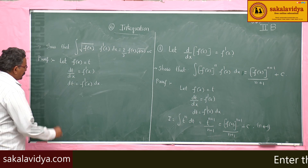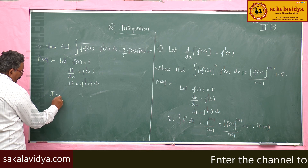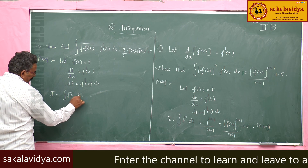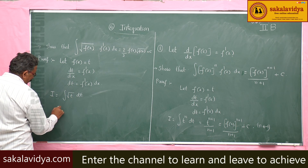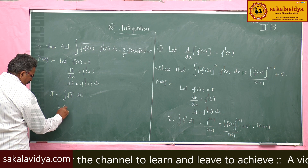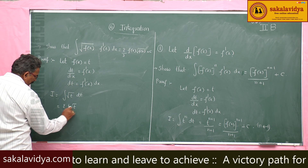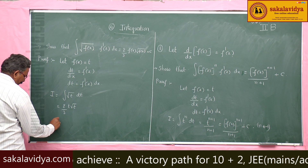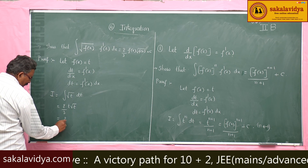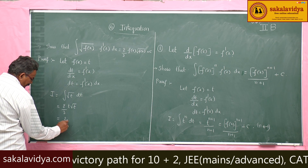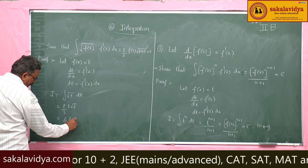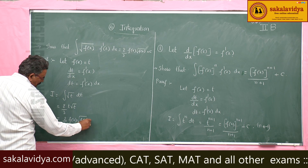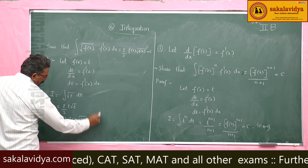Now this integral becomes the integral of √t dt, which equals (2/3) t√t. Since t is nothing but f(x), we get (2/3) f(x)√f(x) plus the constant of integration.